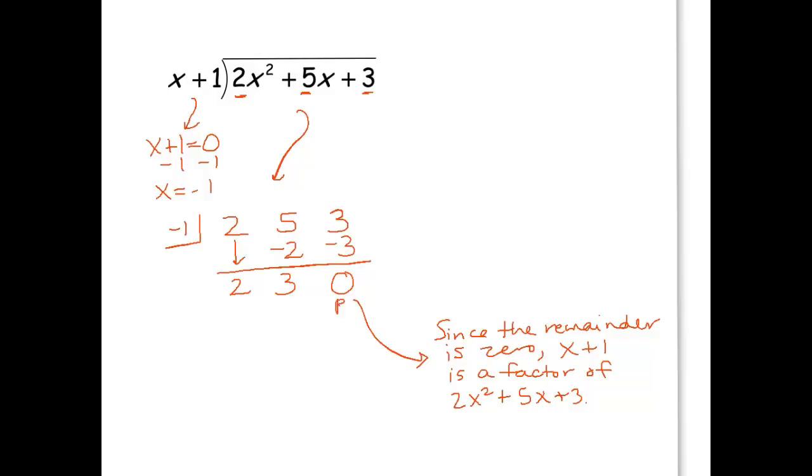So there's our remainder. That makes this the constant, and this is the linear. So our answer is 2x plus 3, and since the remainder is 0, I'm not going to write r0. So this would be our answer right here, 2x plus 3.